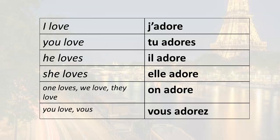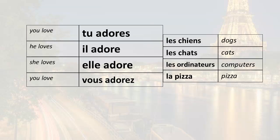So in this lesson, we're going to learn an alternative method for asking simple yes or no questions. We've learned the inversion method. For example, tu adore — you could say adore tu.